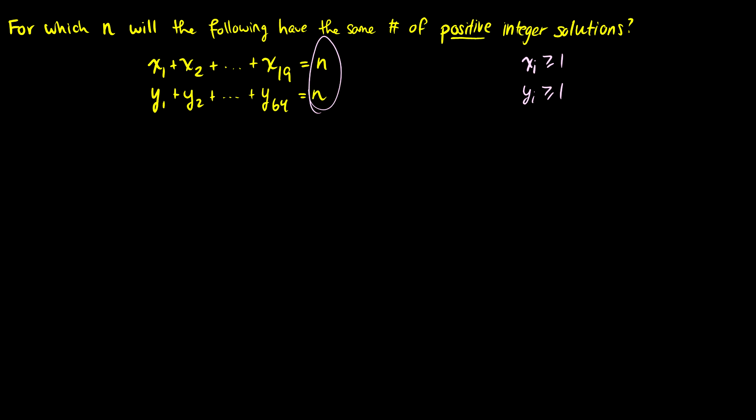So just like the previous question, we have to do some substitution. So all of these x1's or xi's are going to become xi prime plus 1, because we want to reduce these to xi prime is greater than or equal to 0, and yi prime is greater than or equal to 0. So just like the previous one, we have to substitute each one. So each of these xi's is going to get plus 1 added to it, so we subtract 19 from both sides. And then our yi's are going to add plus 1, so we're going to subtract 64.